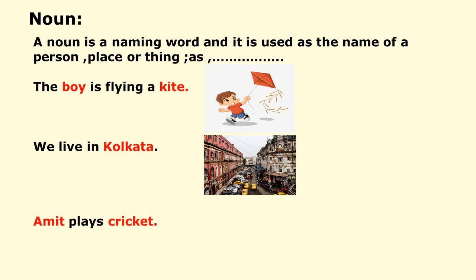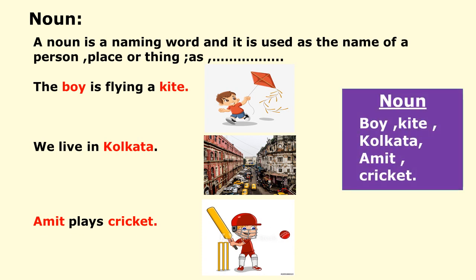'Amit plays cricket' — in this sentence there are two nouns: Amit and cricket. So the nouns are: boy, kite, Kolkata, Amit, cricket — because all are naming words. These are nouns.